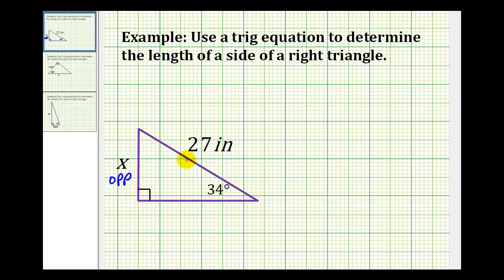And this side here is opposite the right angle, so this would be the hypotenuse. So the trig function that involves the opposite side and the hypotenuse would be the sine function.